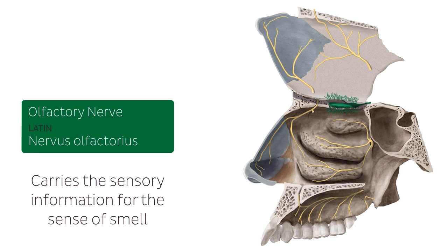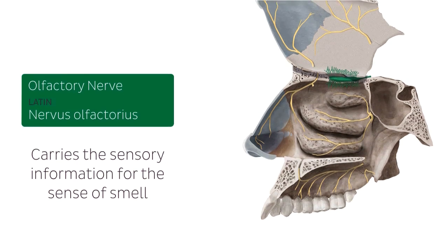In this illustration, which is a sagittal cross-section of the skull, we can see the olfactory nerve fibers arising in the roof of the nasal cavity. More specifically, these fibers arise in the olfactory mucosa and merge to form up to 20 nerve bundles. These bundles, collectively known as the olfactory nerve, course through the foramina in the section.